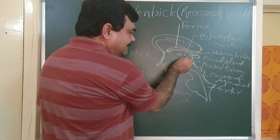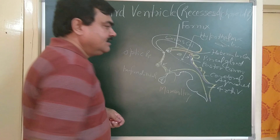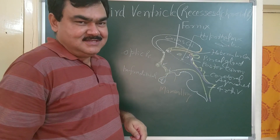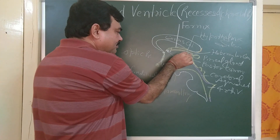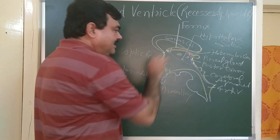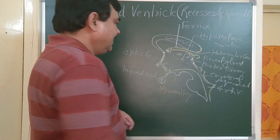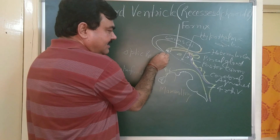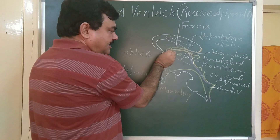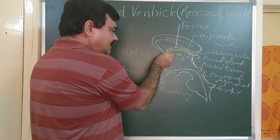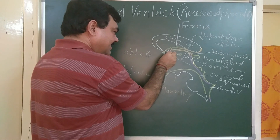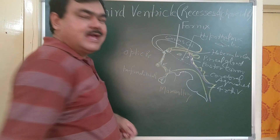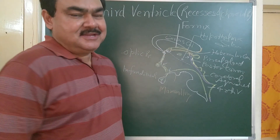Between the two laminae of the pineal stalk there is the pineal recess. Another recess is the suprapineal recess. One more recess is present between the anterior commissure and the interventricular foramen — this is known as the anterior recess, also called the vulva of the ventricle.